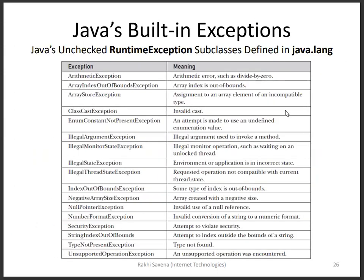Now, some types of exceptions: there are unchecked runtime exception subclasses defined in java.lang — seventeen exceptions in total. If you don't know a specific exception, you can directly use the superclass 'Exception'. For example, throw new Exception, or in a catch block write 'Exception e' — that will cover all of the unchecked exceptions automatically.